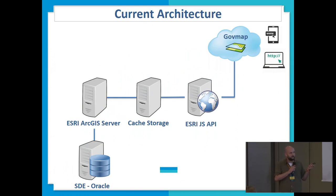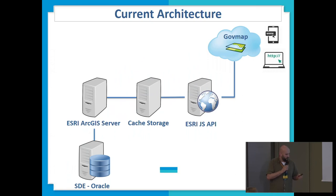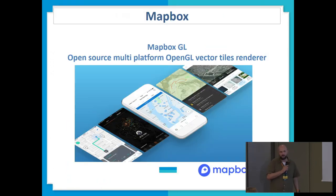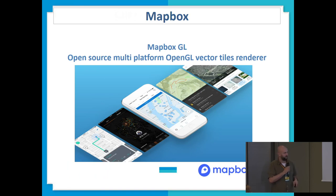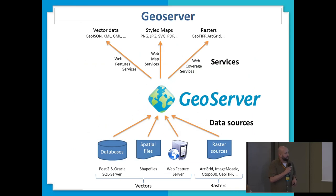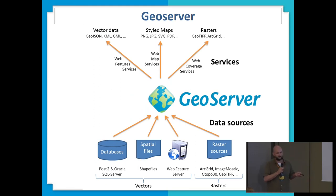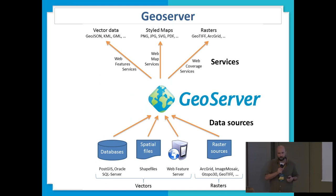We want to move from our current architecture, which is ESRI-based — classic ArcGIS Server, SDE on Oracle, and JavaScript API — to Mapbox at the front end. We are very impressed by Mapbox GL's capabilities to render information and by the styling. We want to use 3D styling capabilities as well. We'll use GeoServer, which allows us to use all types of inputs and the databases we have. There will be a middle part of the transition where we still use Oracle before moving to Postgres.